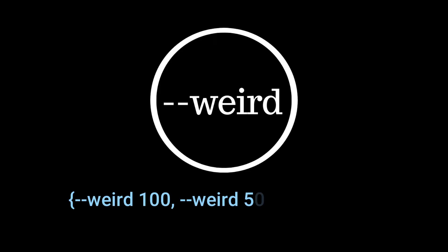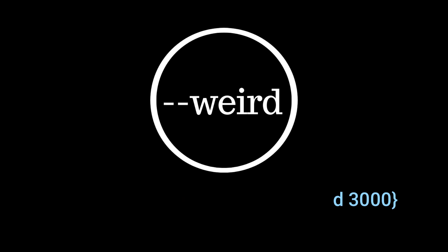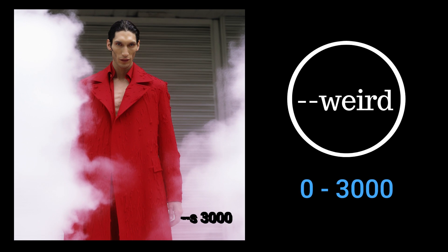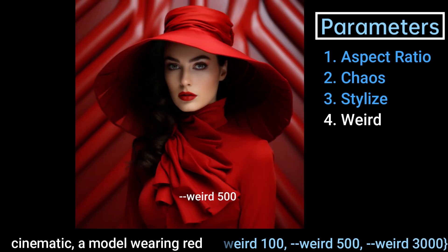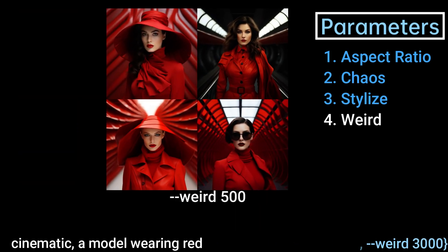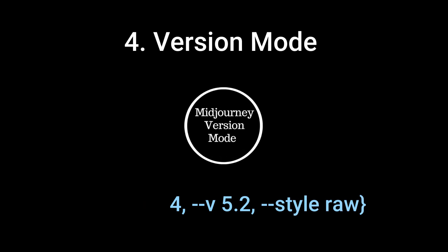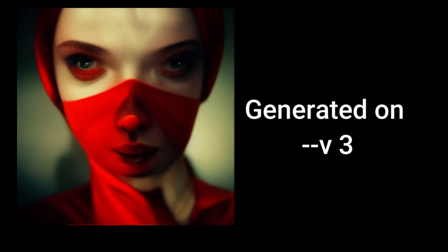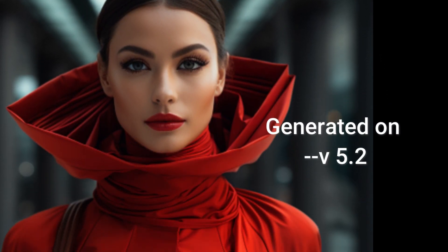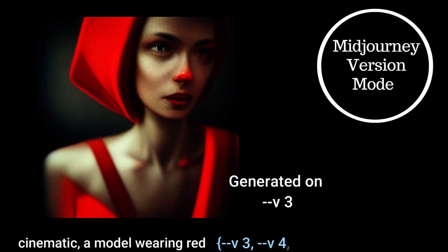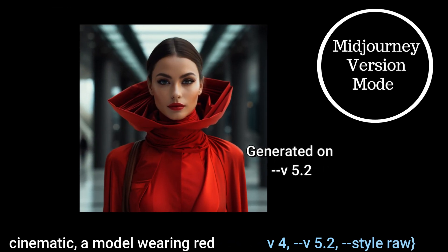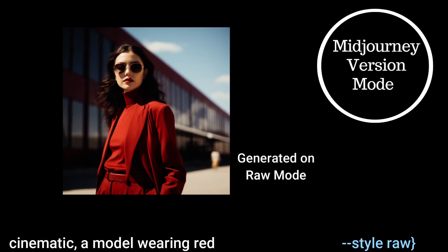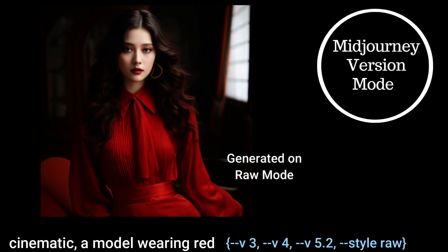For the weird parameter, you can use any value between 0 and 3000: curly bracket, --weird 100, --weird 500, --weird 3000. If you want to generate images using the same prompt but different versions of mid journey, add: curly bracket, --v 3, --v 4, --v 5.2, and for style raw, --style raw, then close the bracket.